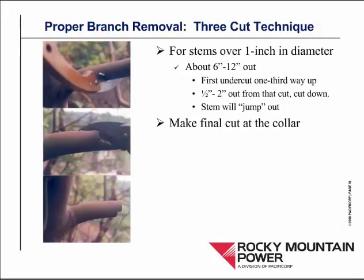For proper branch removal, there's a technique called the three-cut technique. For stems over an inch in diameter, you go out six inches or a foot — maybe farther for larger branches — and you make an undercut about a third of the way up. Then half an inch to two inches out from that cut, you come down from the top and the branch will pop off — it's also called a jump cut. Then you can make your final cut at the collar. In the bottom picture, we can see where the branch has jumped off, and we can also see at the base of the branch a very pronounced line where the branch collar exists — that would be where we make our final pruning cut.